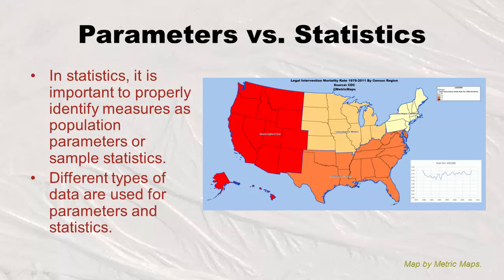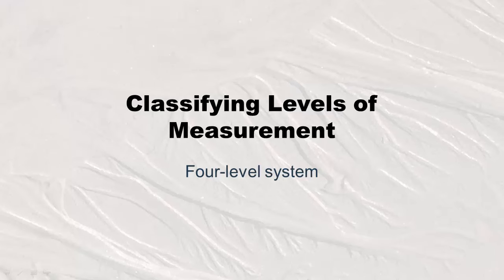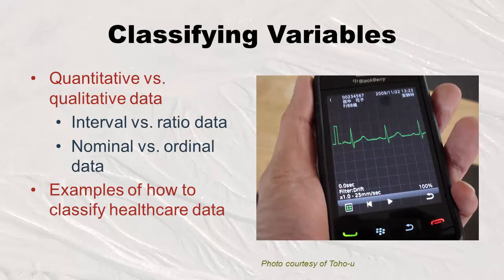In statistics it's really important to properly identify measures as either population parameters or sample statistics, because you can only do inferential statistics on samples. Now we're going to classify variables into different levels of measurement. Variables can only fall into two groups: quantitative versus qualitative. Depending on which group they fall into, you can further classify them as interval versus ratio, or nominal versus ordinal. I'll give examples of how to classify healthcare data types.